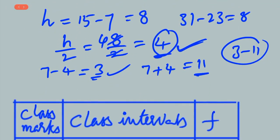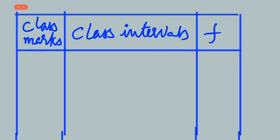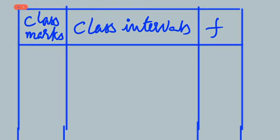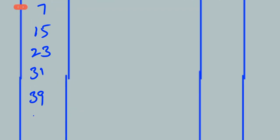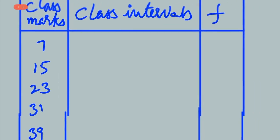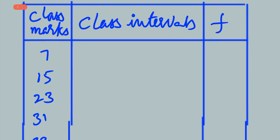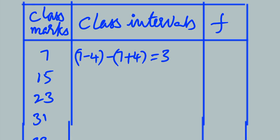Now let us write the distribution table. First, write all the class marks: 7, 15, 23, 31, 39, and 47 — these are the given mid values. Using these mid values we find the class intervals. For the first interval: 7 minus 4 is 3, and 7 plus 4 is 11, so the first class interval is 3 to 11.